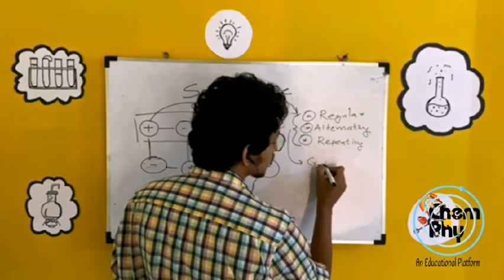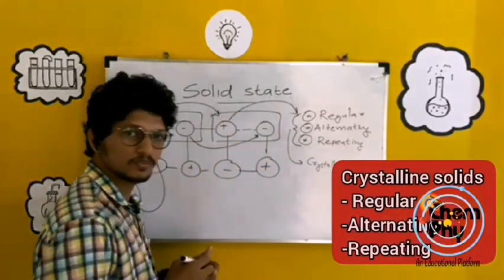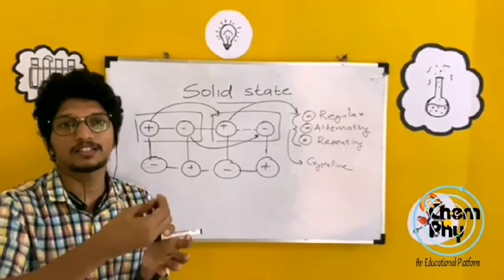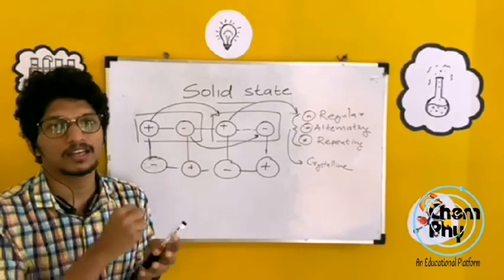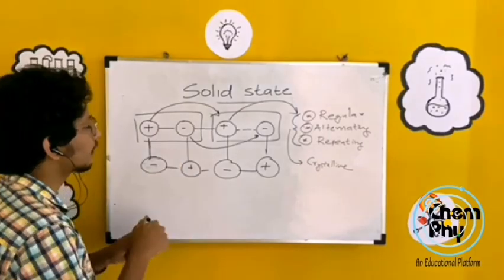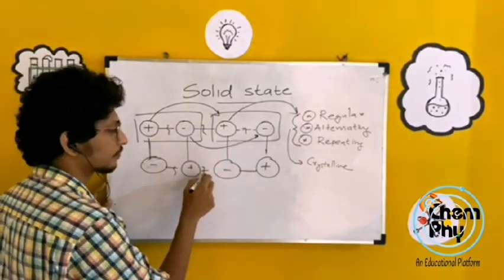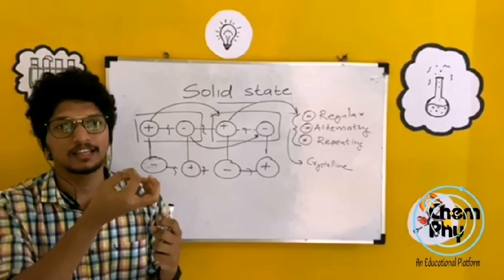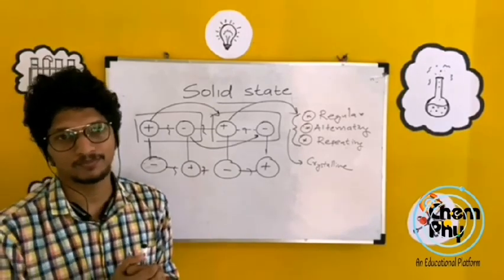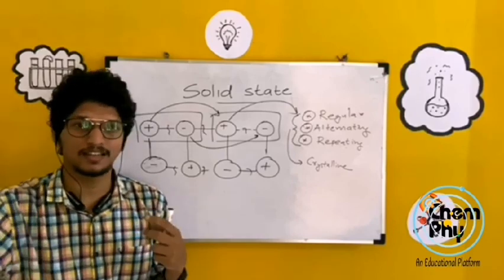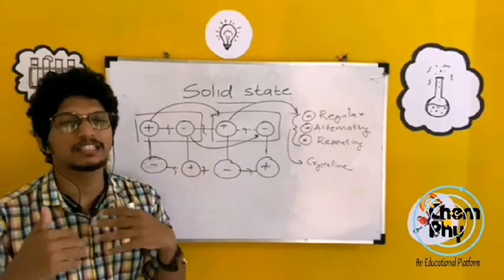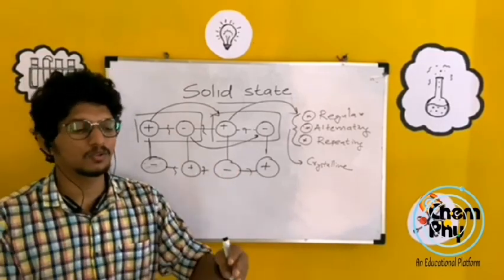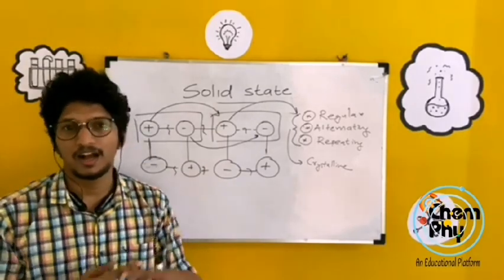Crystalline solids have a regular arrangement. When thermal energy is acquired, the constituent particles in liquids and gases have a random arrangement compared to crystalline solids.